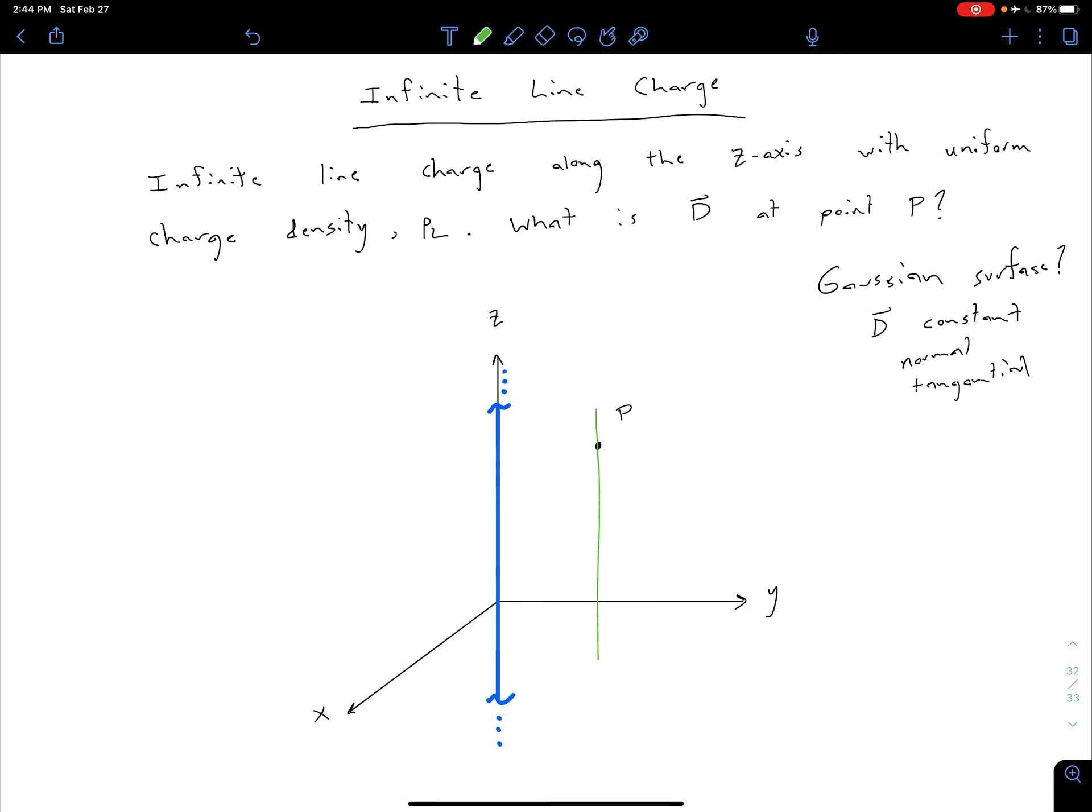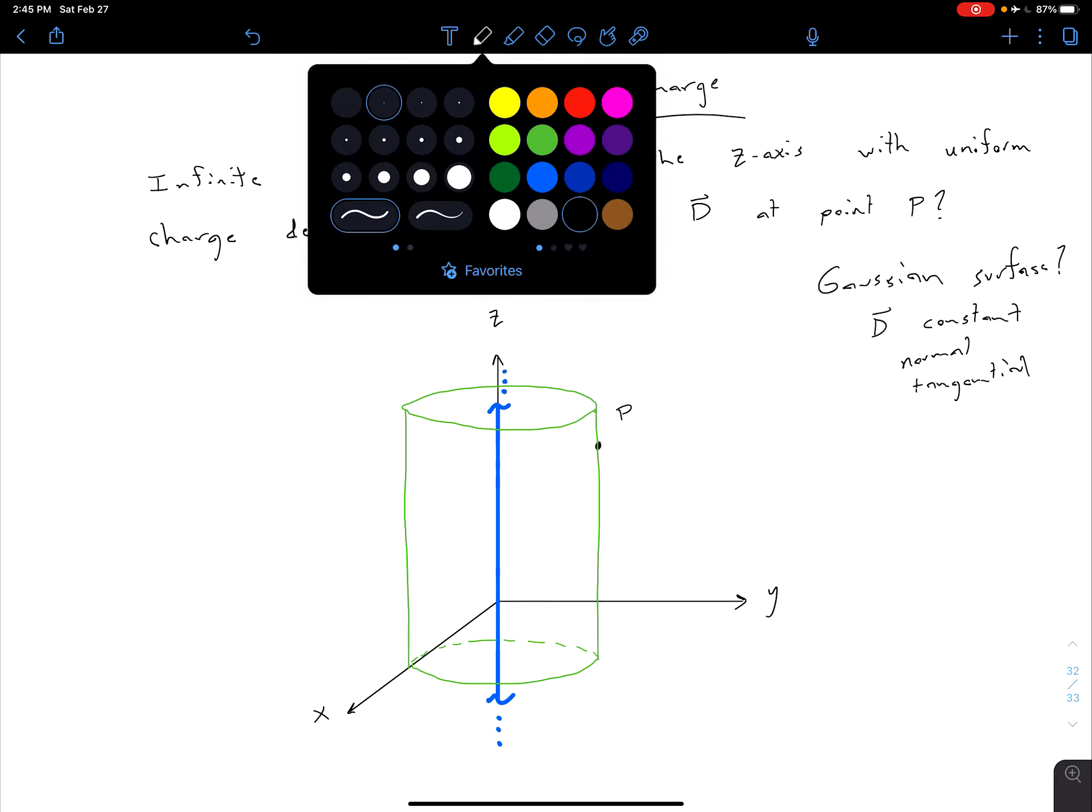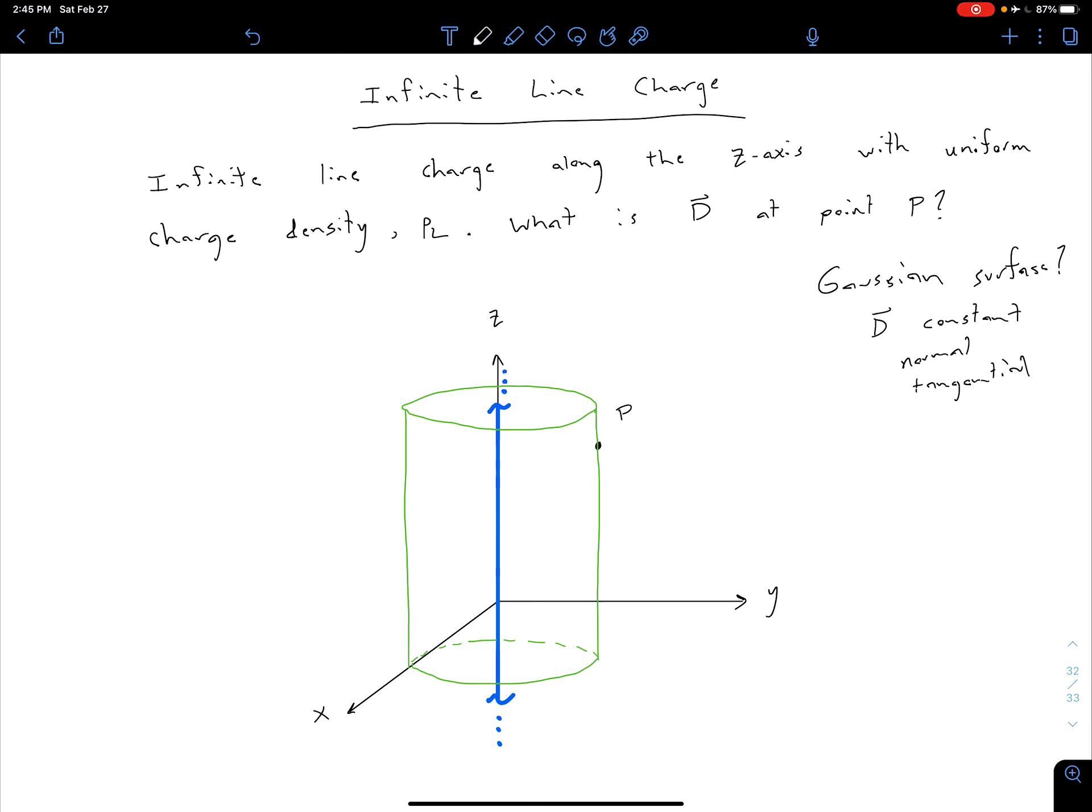So again, I'm going to do my best to draw this, but kind of use your imagination or your visualization to fill in any gaps in my inability to draw. So we've got some Gaussian surface, which is a cylinder. And on the surface of this Gaussian surface is our point P.